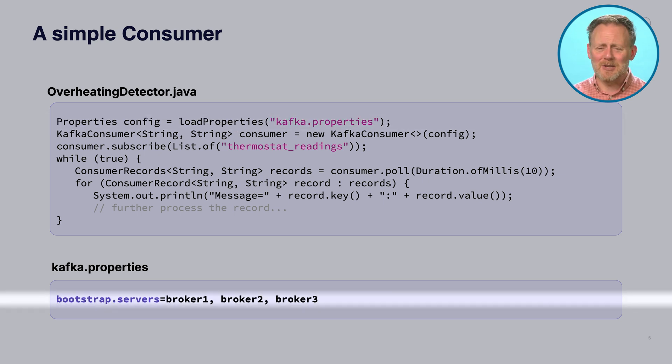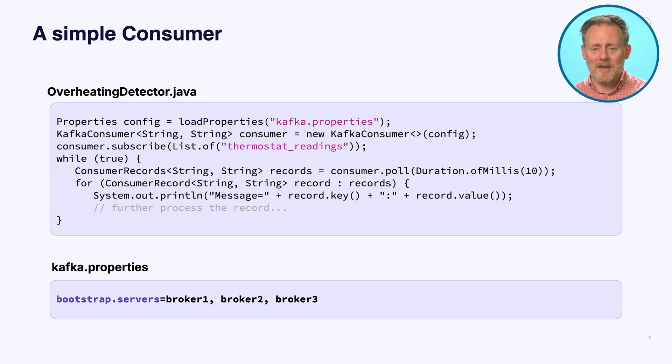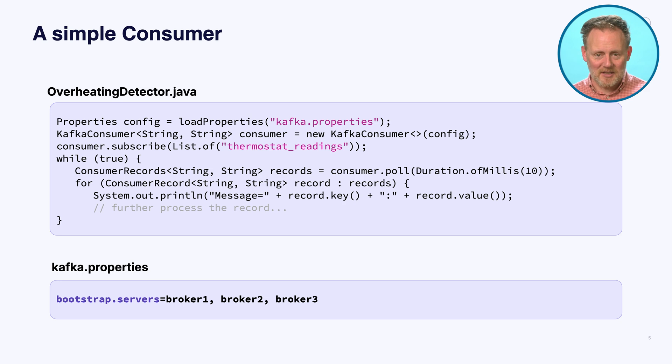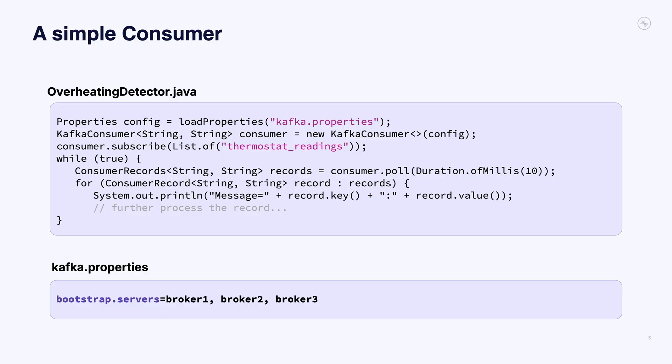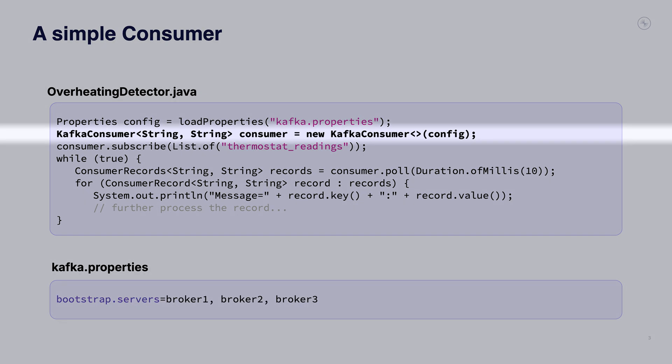In real life, there could be five or ten of these — some security settings and things. At a minimum, you at least need to point the consumer to the cluster so it knows what brokers to try to access to be able to read the rest of the metadata about the cluster. As we explained in the section on producers, you don't need to give it the full list of all the brokers — that would probably be inconvenient. It just needs enough that one of those will be up and available; it'll be able to talk to that one and learn what it needs about the whole cluster. And with that, we connect to the Kafka cluster with the KafkaConsumer object.